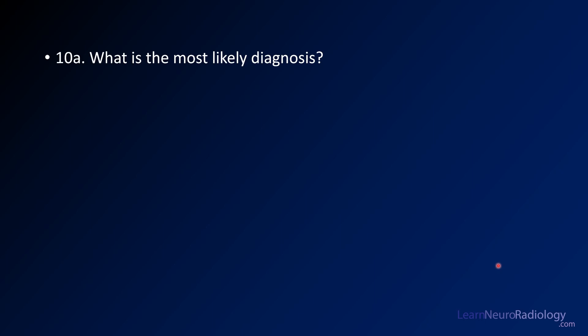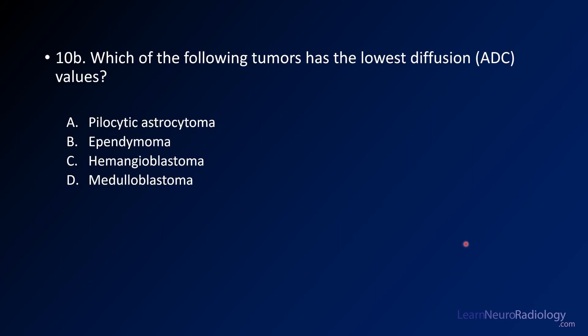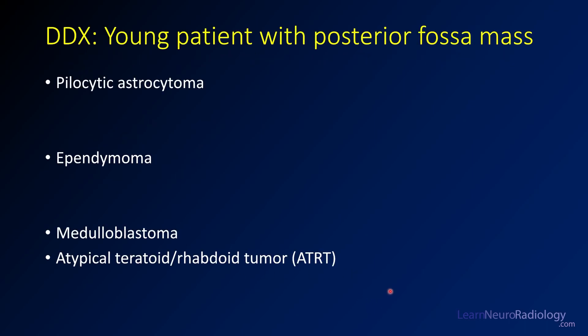Your first question is: what's the most likely diagnosis? What do you think this is most likely to be? Your second question is: which of the following tumors has the lowest ADC values — is it pilocytic astrocytoma, ependymoma, hemangioblastoma, or medulloblastoma?